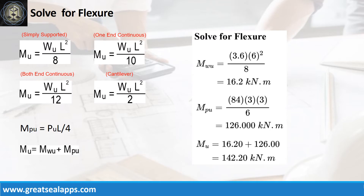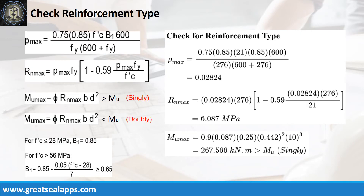Given factored uniform load of 3.6 kN per meter, factored concentrated load of 84 kN, and L equals 6 meters: the maximum moment from uniform load is 16.2 kN·m, and the maximum moment from concentrated load is 126 kN·m, for a total maximum design moment of 142.2 kN·m. The ρ max is 0.02824, the Φrn max is 6.087 MPa, and the MU max is 267.566 kN·m — greater than 142.2 kN·m — confirming singly reinforced beam design.